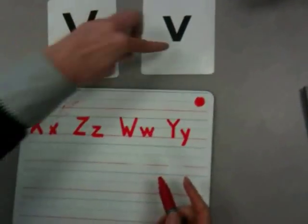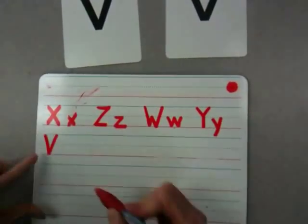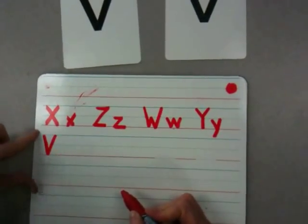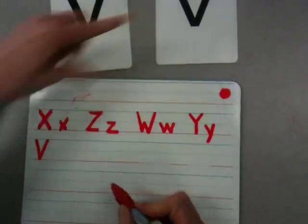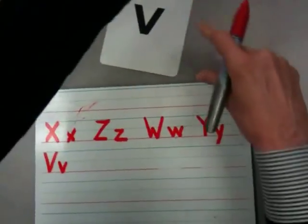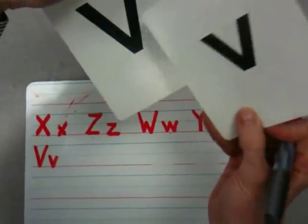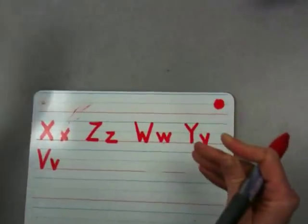Uppercase V, lowercase V. Uppercase takes the lines from top to bottom. Lowercase uses half of the lines. That's uppercase V and lowercase V. Which one's big, and which one's little? This one's big, this one's little.